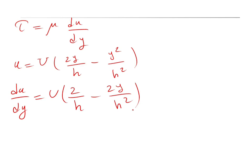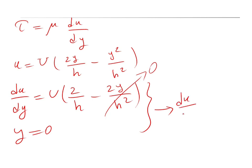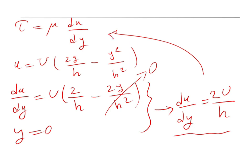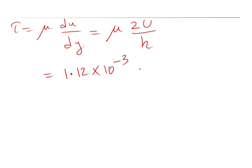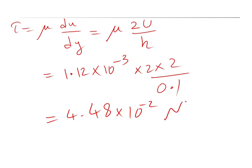The question asks for shear stress at the surface where y equals 0. Substituting y = 0, the second term cancels out, giving du/dy equal to 2U/h. Substituting into Newton's law: tau equals mu times 2U/h, which equals 1.12 × 10⁻³ times 2 times 2 divided by 0.1, giving 4.48 × 10⁻² N/m².